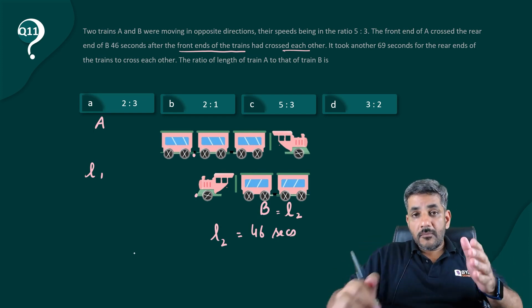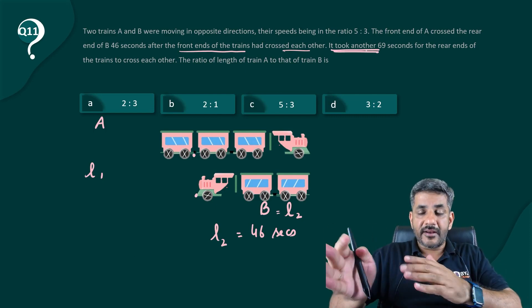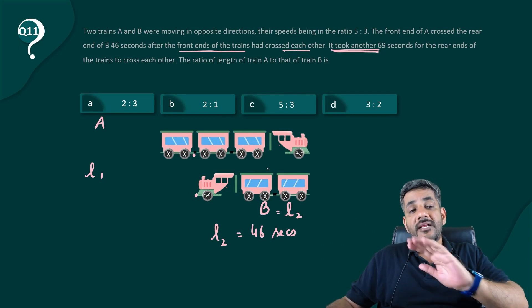Similarly, from this point, it took another 69. Another means from this point now, it took another 69 seconds for the rear ends of the trains to cross each other.